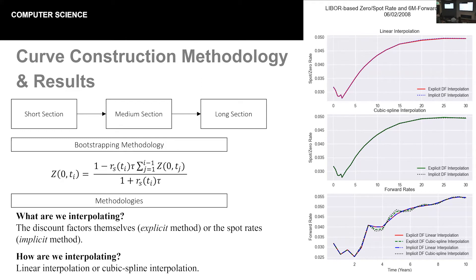Now, for the short section, we may use deposit rates such as LIBOR. For the medium section, we may use forward rate agreements or euro dollar futures. And then for the long section, we will typically use swaps. Now for the first two, there are explicit formulas that link the observed market rates to the discount factor. So nothing particularly challenging there. However, for the long section, we need to use a technique called bootstrapping. And as you can see, the formula is given on the slide.